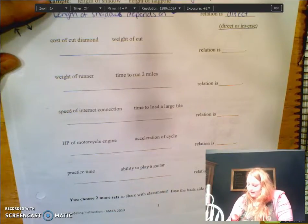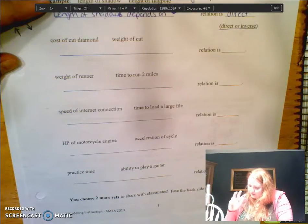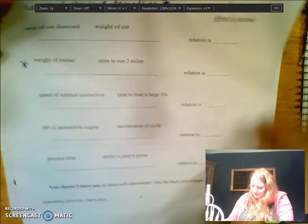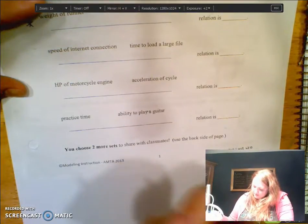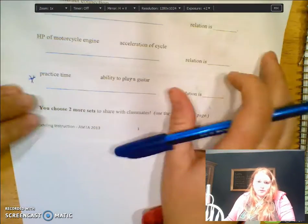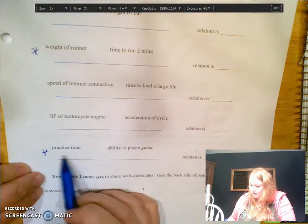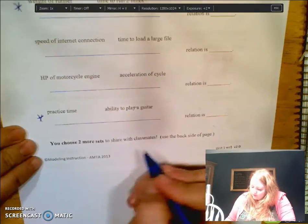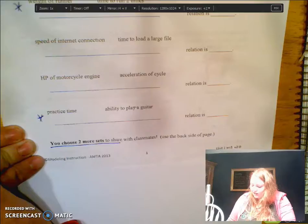Let's see, we can look at this one right here. The weight of the runner and the time to run two miles, and the practice time and ability to play guitar. Also, you need to choose two more sets to share with your classmates.